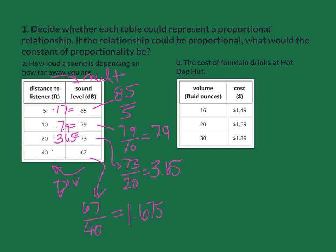The next one is 73 divided by 20, which is 3.65. And the last one is 67 divided by 40, which is 1.675. Each one has a different number, scale factor, or constant, but it's not constant, so we can safely say this one is not proportional.